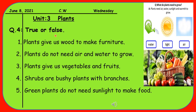Sentence one is: Plants give us wood to make furniture. All the furniture we are using is made of wood, and we can get wood from plants. So plants give us wood to make furniture — is it true? Yes, it is true. Write T.